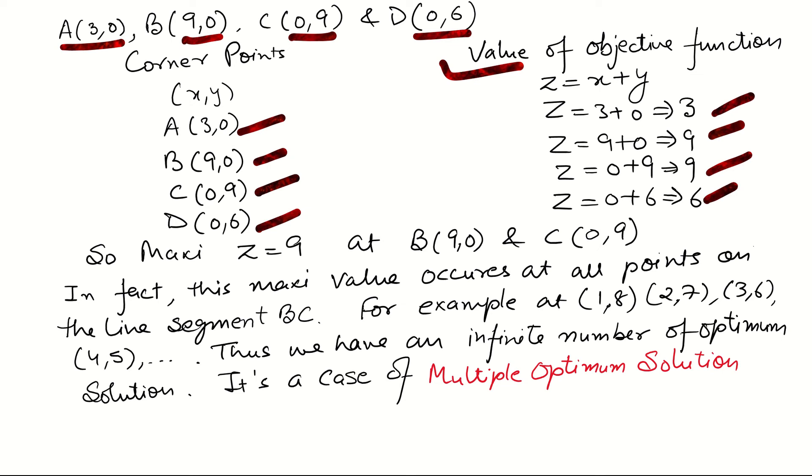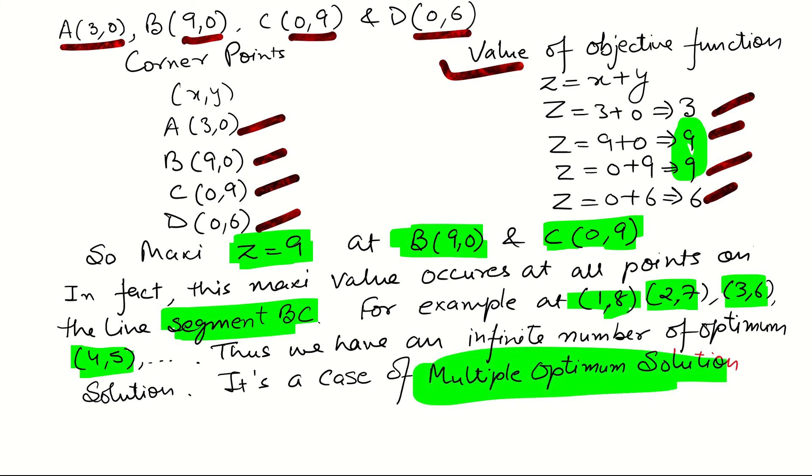If we see this figure, the maximum value z is 9 at B and at C. In fact, this maximum value will occur at all the points on the line segment BC. If you take any point on BC, for example 1,8 or 2,7 or 3,6 or 4,5 and so on, any point on the line BC will get the same result, z equals 9. Thus, we have an infinite number of optimum solutions. That's why it's a case of multiple optimum solution.